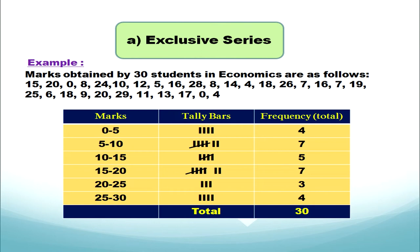30 students have got marks in economics. For 30 students we can take a class interval gap of 5. We form the classes first: 0 to 5, 5 to 10, 10 to 15, 15 to 20, 20 to 25, 25 to 30. The values start from 0 and end up to 29. The upper limit of the previous class is the next lower limit, and the gap between the classes remains the same — 5.